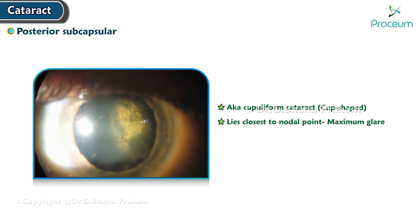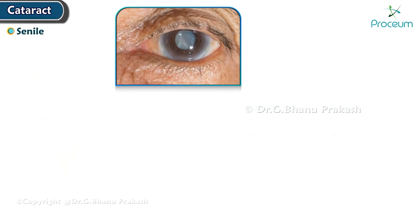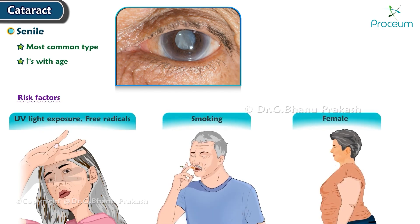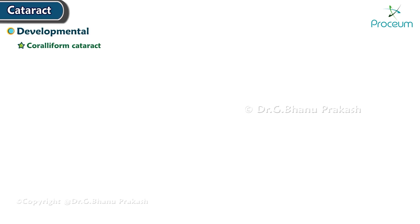Posterior subcapsular cataract, also known as cupuliform cataract (cup-shaped), lies closest to the nodal point and gives maximum glare among all cataracts, producing maximum vision loss. Senile cataract is the most common type of cataract, increasing with age. Risk factors include ultraviolet light exposure, free radicals, smoking, female gender, and high body mass index.